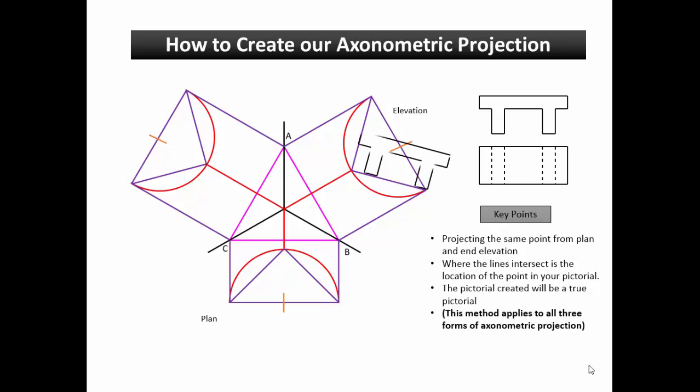Firstly, draw in two of your orthographics, in this case the elevation and plan. When doing this, ensure their orientations are correct. For example, if you had the plan pointing in the opposite direction, this pictorial would not work.